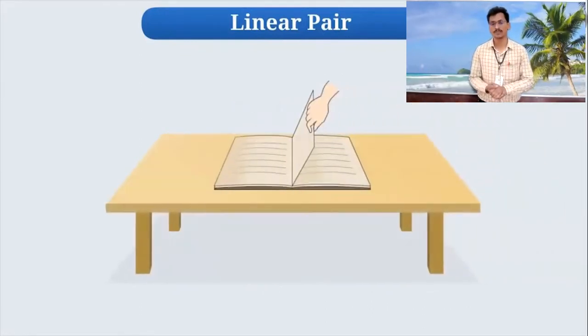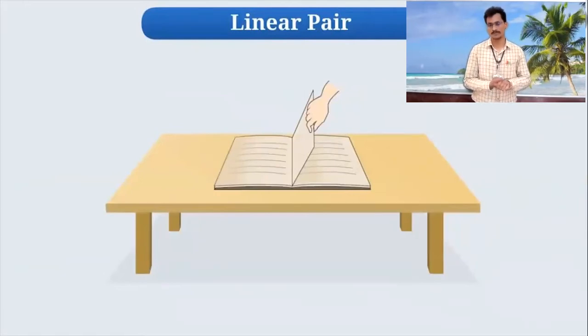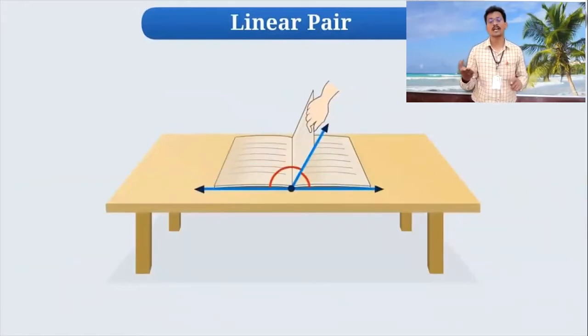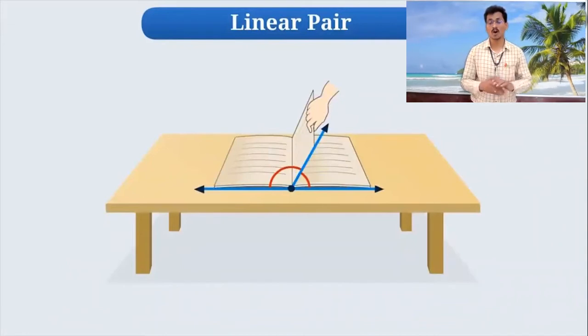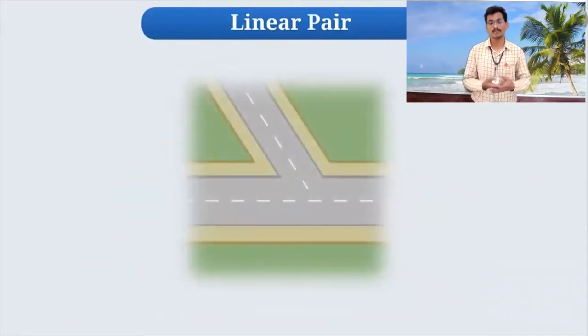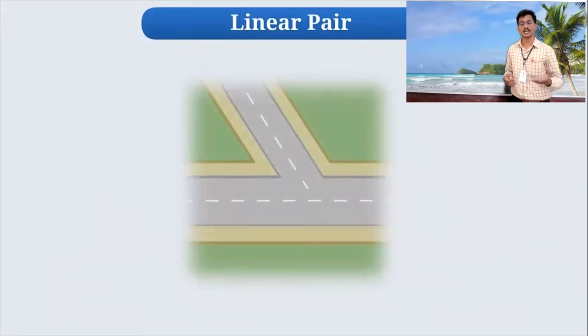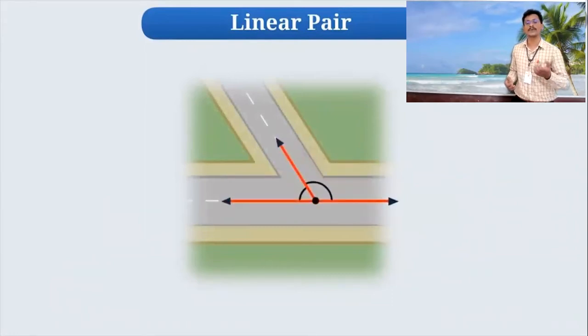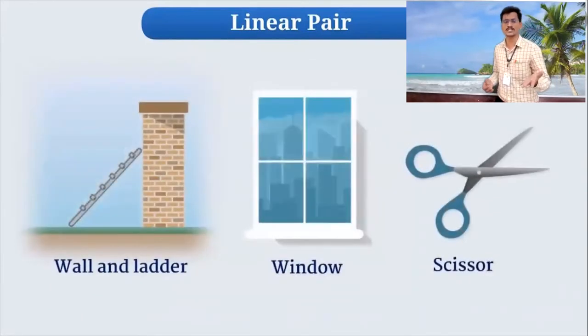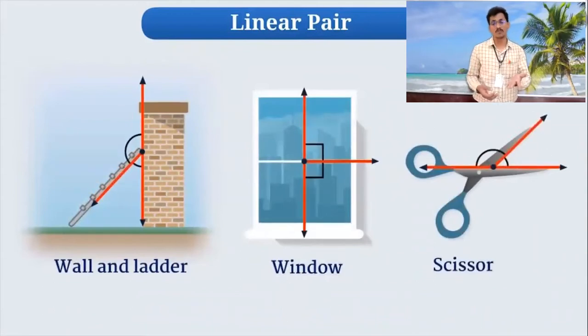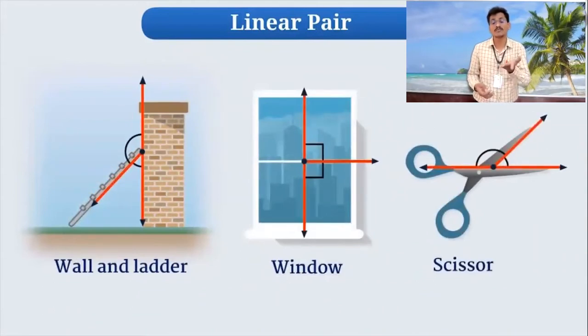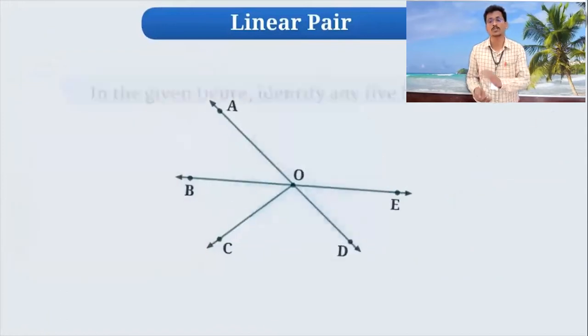If you will observe, these are on one line. Two angles are on one line. Same figure if you will check, these are also linear pairs. Now some examples: wall and ladder, window, scissor. If such angles you will check, those are linear pairs.